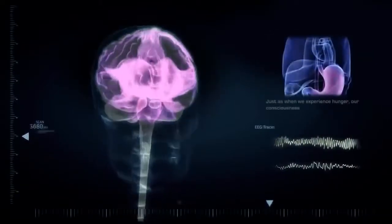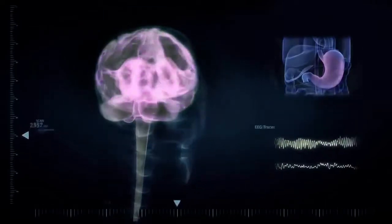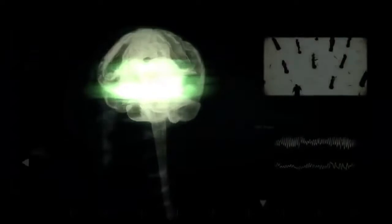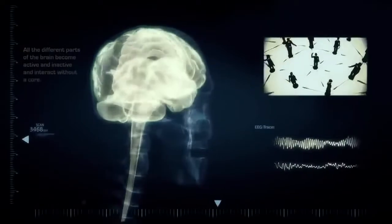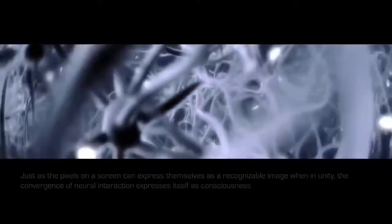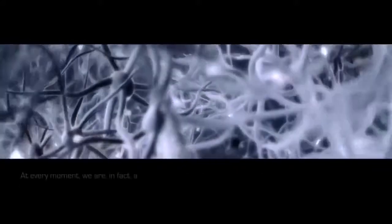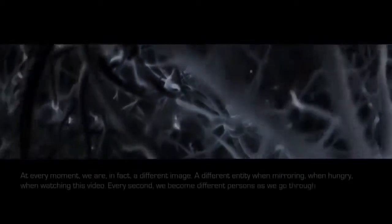Just as when we experience hunger, our consciousness consists mostly of neural interactions for consuming food. This is not the result of some core self giving commands to different cerebral areas. Just as the pixels on a screen can express themselves as a recognizable image when in unity, the convergence of neural interaction expresses itself as consciousness. At every moment, we are in fact a different image, a different entity when mirroring, when hungry, when watching this video. Every second, we become different persons as we go through different states.